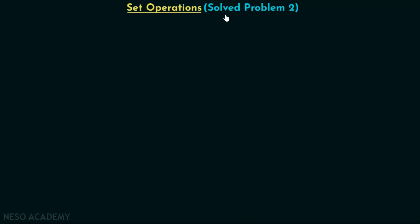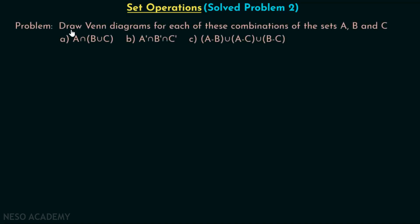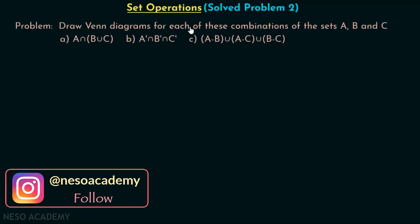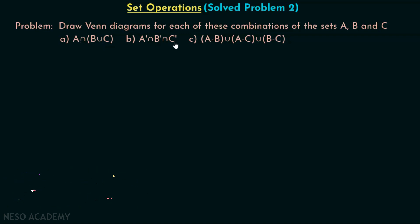In this presentation, we will try to solve problem 2 on set operations. Here is the problem: Draw Venn diagrams for each of these combinations of the sets A, B and C. We have all these combinations: A intersection B union C; A complement intersection B complement intersection C complement; and A minus B union A minus C union B minus C.